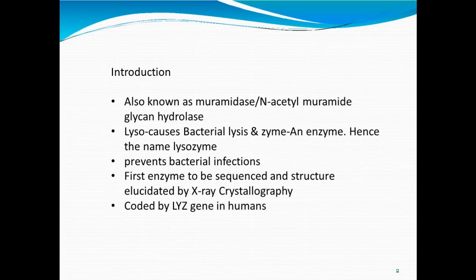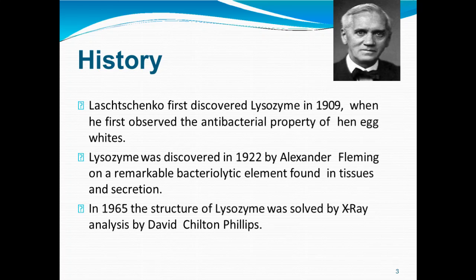It is the first enzyme to be sequenced and its structure was elucidated by X-ray crystallography. It is coded by LYZ in human beings. Regarding its history, though it was a Russian scientist Lashchenkov who discovered lysozyme in 1909 in hen egg whites, the credit goes to Alexander Fleming who discovered it in 1922 in tissues and secretions of humans. The structure of lysozyme was solved by X-ray crystallography in 1965 by David Chilton Phillips.